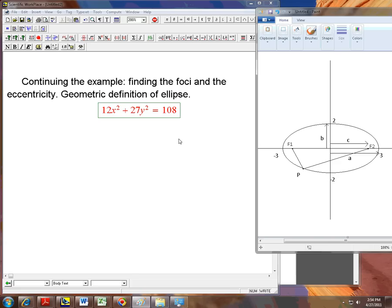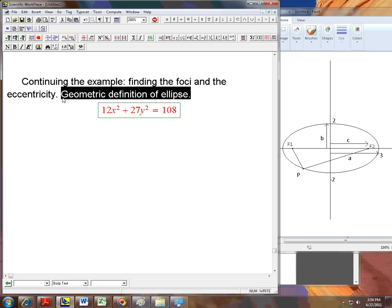I'm going to continue the example from video 1, 12x squared plus 27y squared equals 108, and use it to talk about the geometric definition of an ellipse, and in particular, how would you find the foci and the eccentricity of an ellipse.